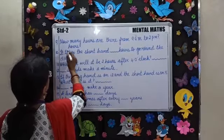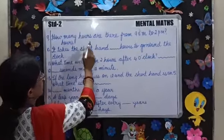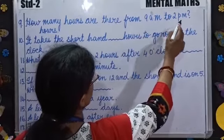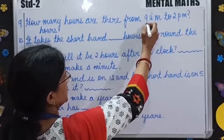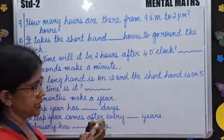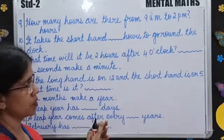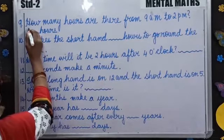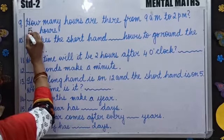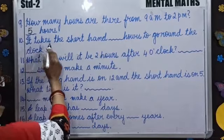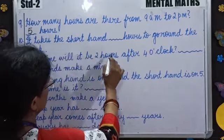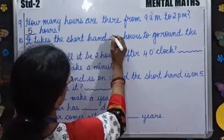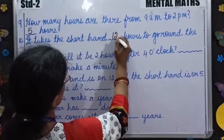Question number 9: How many hours are there from 9 a.m. to 2 p.m.? You'll count from the next number: 10, 11, 12, 1, 2. So how many hours? 5 hours. It takes the short hand 12 hours to go round the clock.